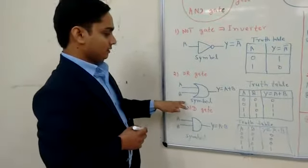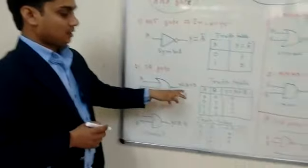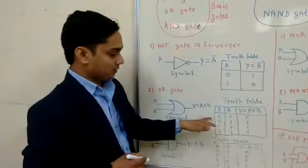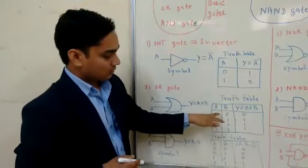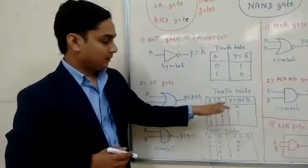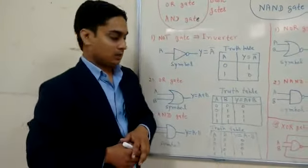This is the symbol. And the output of OR gate is A plus B. This is the truth table. For 0, 0 case, we are getting 0. For 0, 1 case, we are getting 1. Similarly, we are getting other outputs.